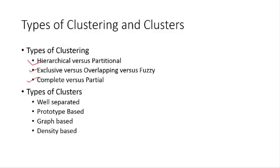A final distinction worth mentioning is complete versus partial clustering. Complete clustering assigns every object to a cluster. Partial clustering does not — it clusters most data points but leaves out those that don't clearly belong to any cluster. The motivation is that you're more interested in the cluster formation itself, and you don't want ambiguous data points that don't clearly belong to one cluster to distort the cluster centers or the divisions you've created.